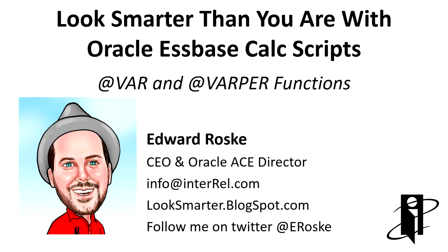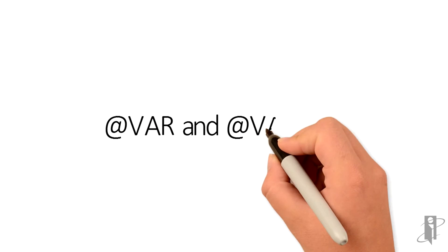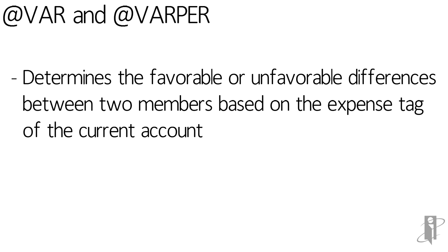Two of the oldest Essbase Calc Script functions are ATVAR and ATVARPER. ATVAR and its related function ATVARPER determine when you should have one member minus another, or the other way around.